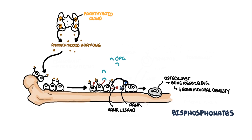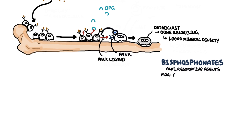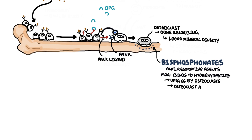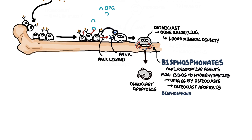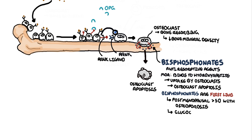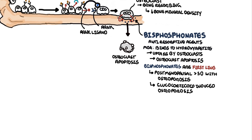Bisphosphonates are one of the most important drug classes — they are anti-resorptive agents. They work by binding to hydroxyapatite binding sites on the surface of bone tissue. Bisphosphonate components are then taken up by osteoclasts during bone resorption, which interferes with osteoclast function and promotes osteoclast apoptosis, causing them to die and reducing bone resorption. Bisphosphonates are the first-line treatment for osteoporosis in post-menopausal women and men over the age of 50. In glucocorticoid-induced osteoporosis with moderate to high fracture risk, oral bisphosphonates are recommended as first-line therapy, regardless of age.